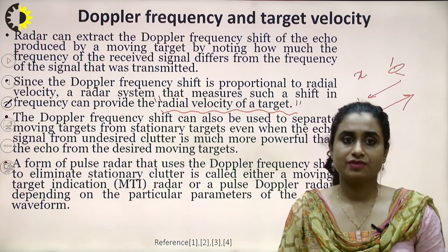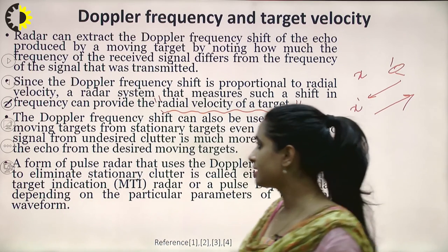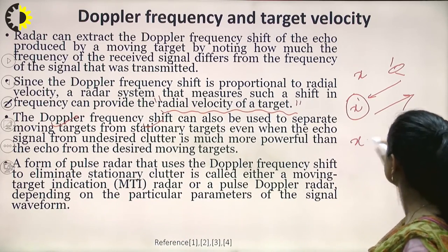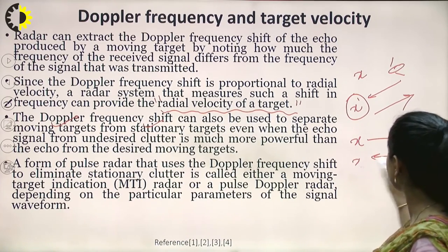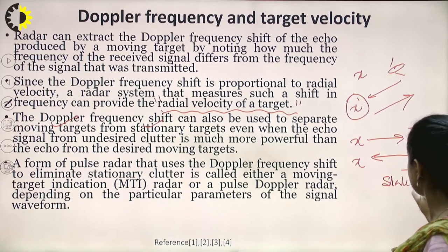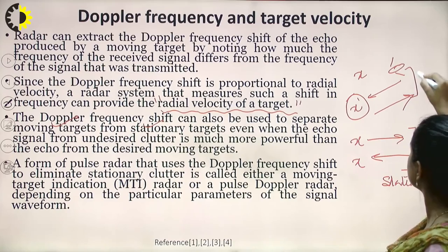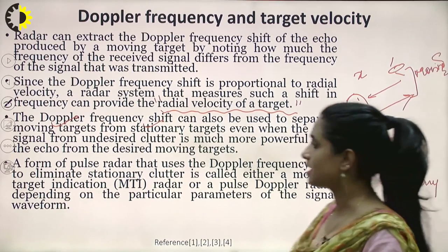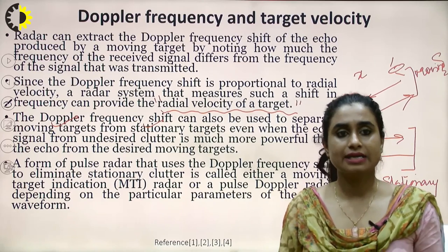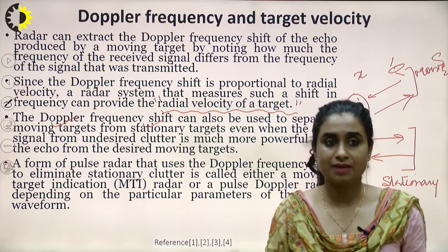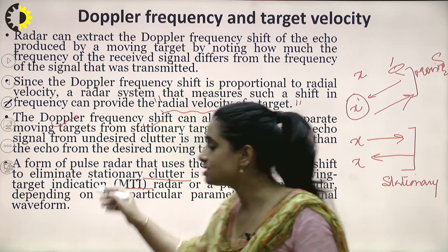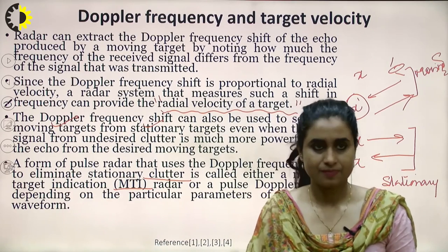The Doppler shift can also separate moving targets from stationary ones. If no frequency shift occurs — the same frequency X was transmitted and received — the target is stationary. If a different frequency X' is received, the target is moving. A form of pulse radar that uses Doppler frequency shift to eliminate stationary clutter is called moving target indication (MTI), which will be studied in detail in coming lectures.